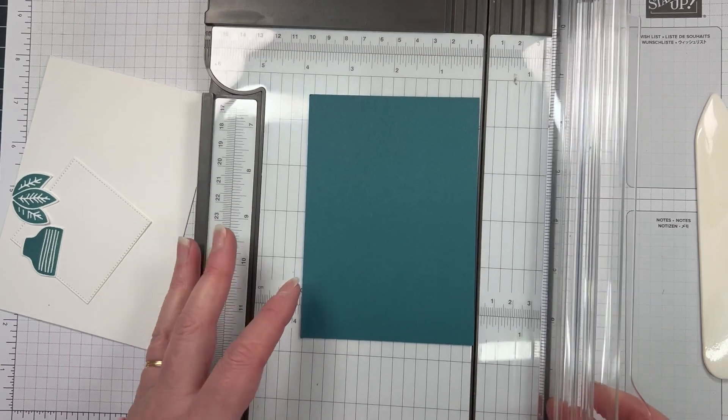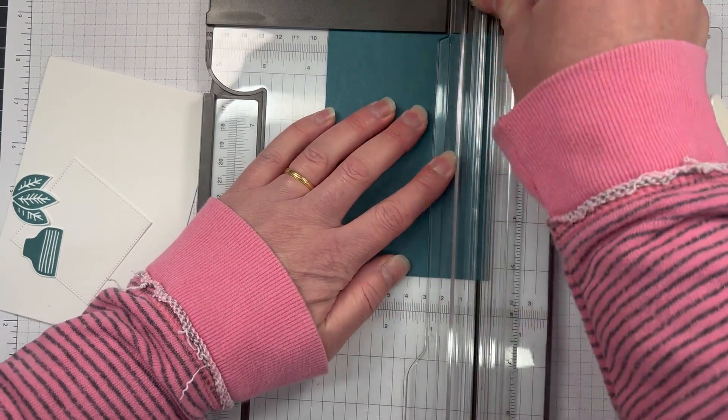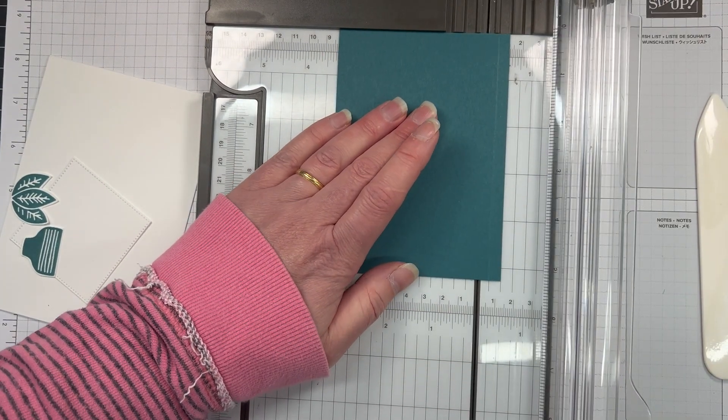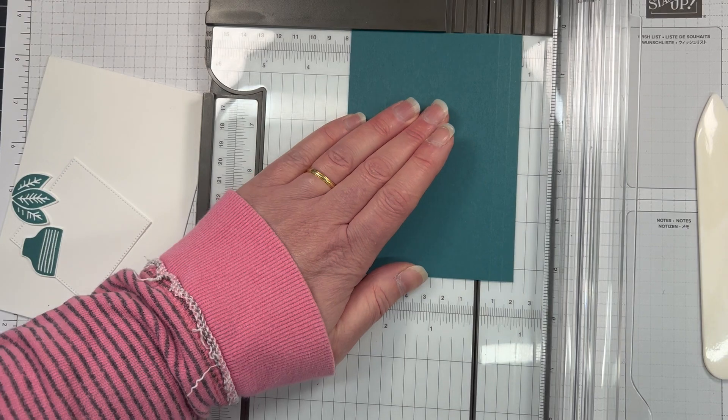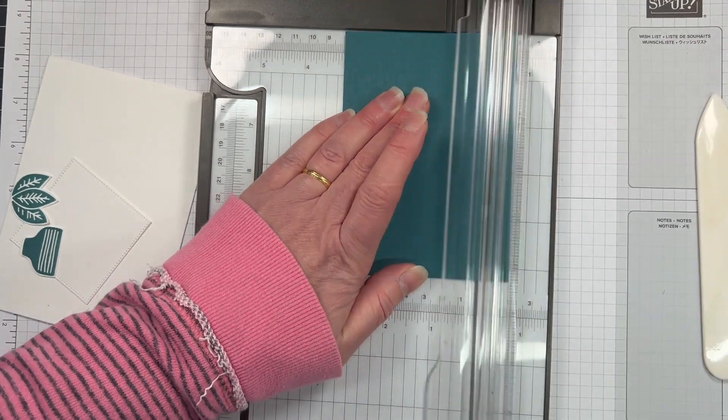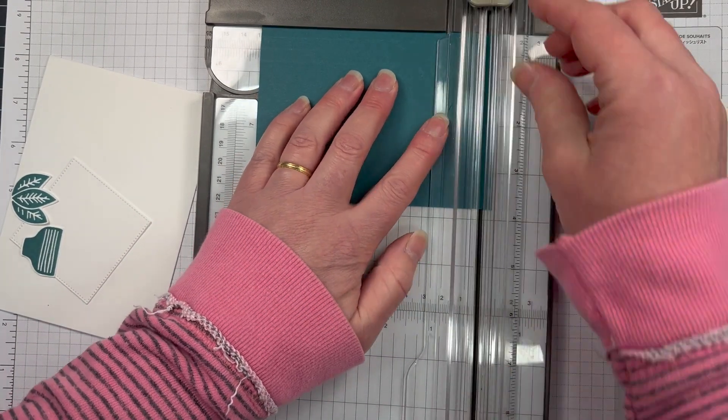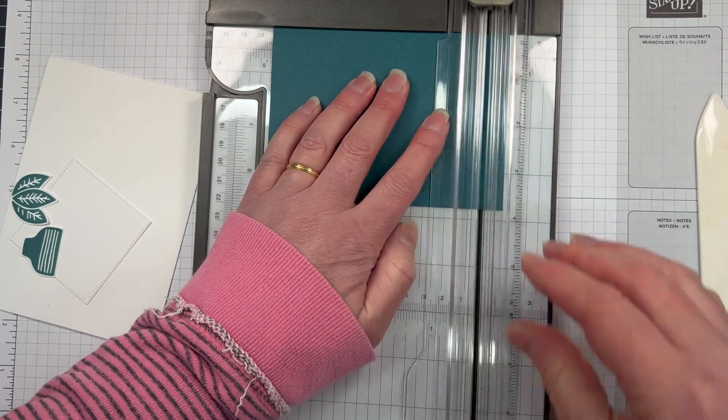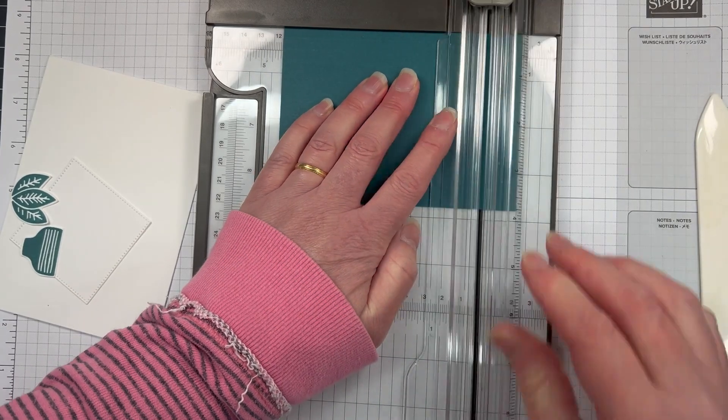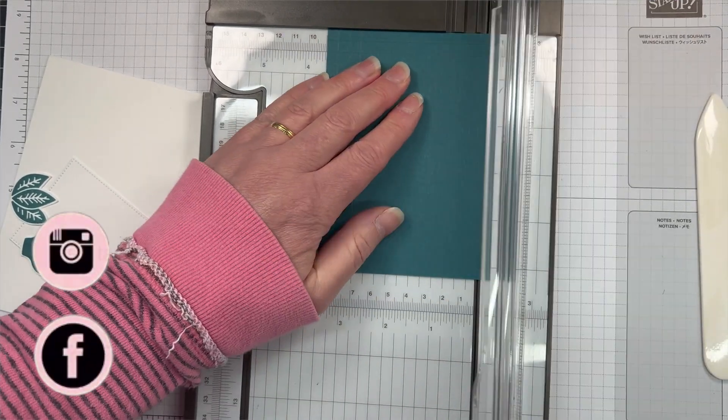So I've got my matting here in the Pretty Peacock card base, and what I really wanted to do is add some little interest without embossing it. So I'm just taking my paper trimmer and scoring three times on all four sides, and this just gives it a little bit of extra interest.